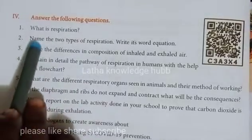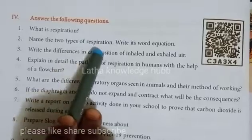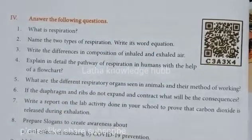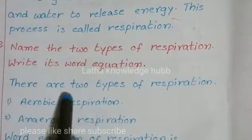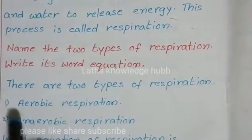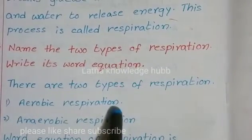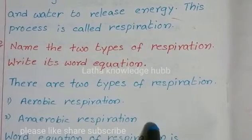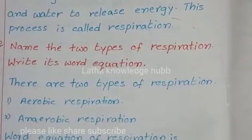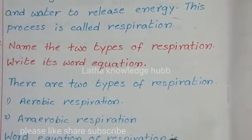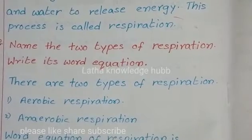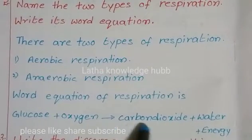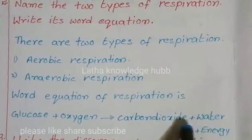Name the two types of respiration and write their word equations. There are two types: one is Aerobic Respiration, and the second is Anaerobic Respiration. The word equation is: Glucose + Oxygen → Carbon Dioxide + Water + Energy.